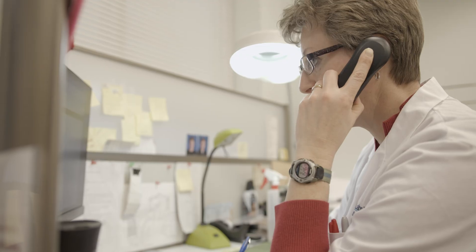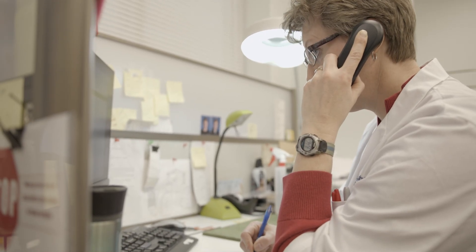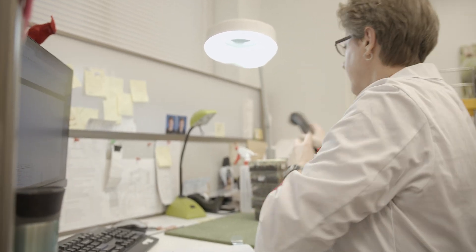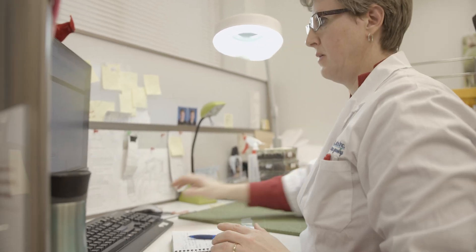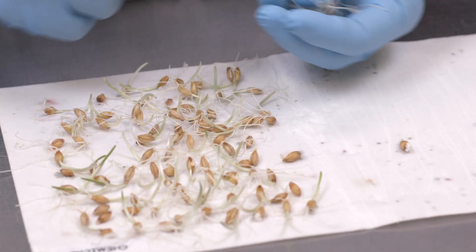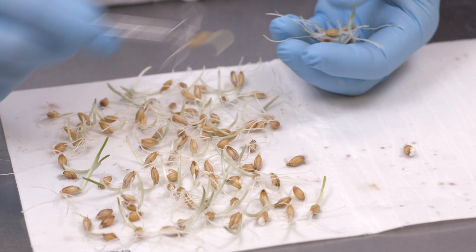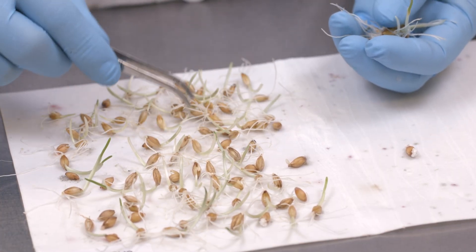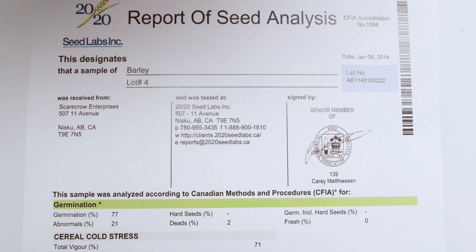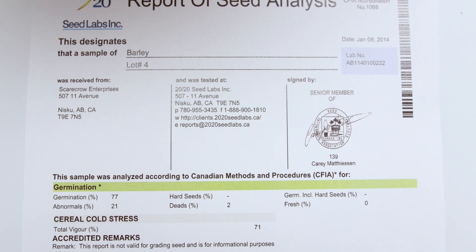It is important to note that we would recommend sourcing new certified seed, as this seed is not stable and the germination will be compromised quickly. Minimum germination grade table requirements are 85% for certified number one on cereals. Any issues noted in your sample will be stated in the comments section of the report of seed analysis.